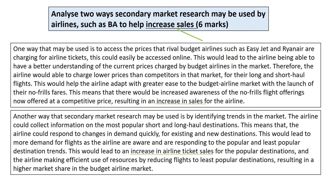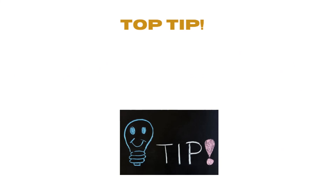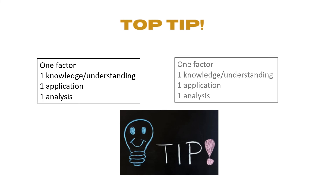Top tip: try to think of this six mark analyse question — where two ways, impacts, reasons or factors are asked for — as two three-mark questions. Two factors are asked for, and for each valid factor it can achieve one knowledge and understanding mark, one application mark, and one analysis mark. Each valid factor is therefore marked separately. So if only one valid factor is identified, then a maximum of three marks can be achieved.